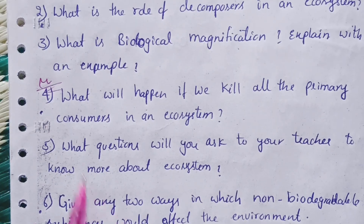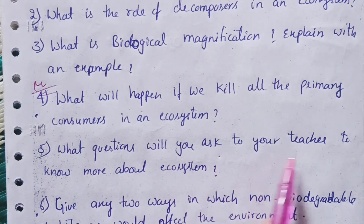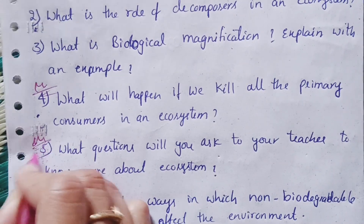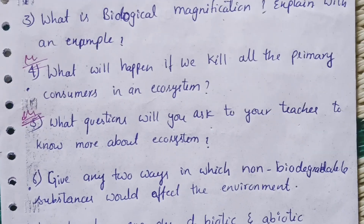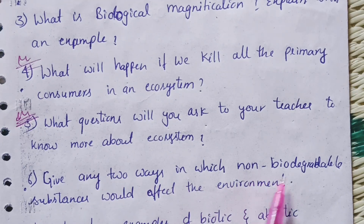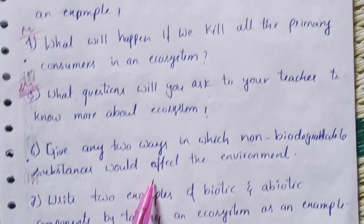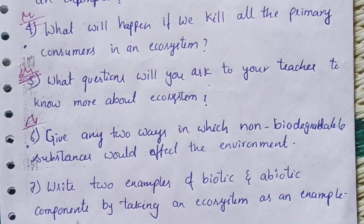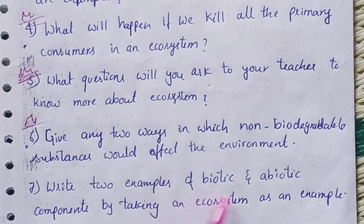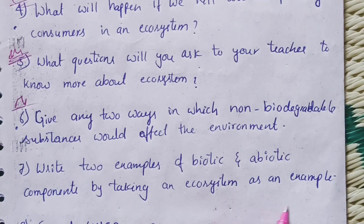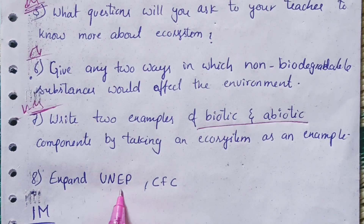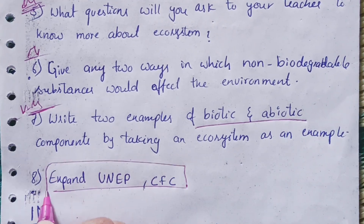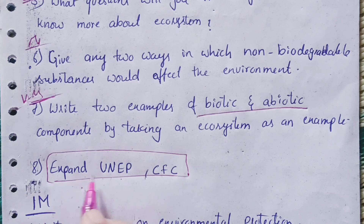The fifth two-mark question is: What questions will you ask your teacher to know more about ecosystem? The sixth: Give any two ways in which non-degradable substances would affect the environment. The seventh — very important: Write two examples of biotic and abiotic components by taking an ecosystem as an example. The last one: Expand UNEP or CFC.